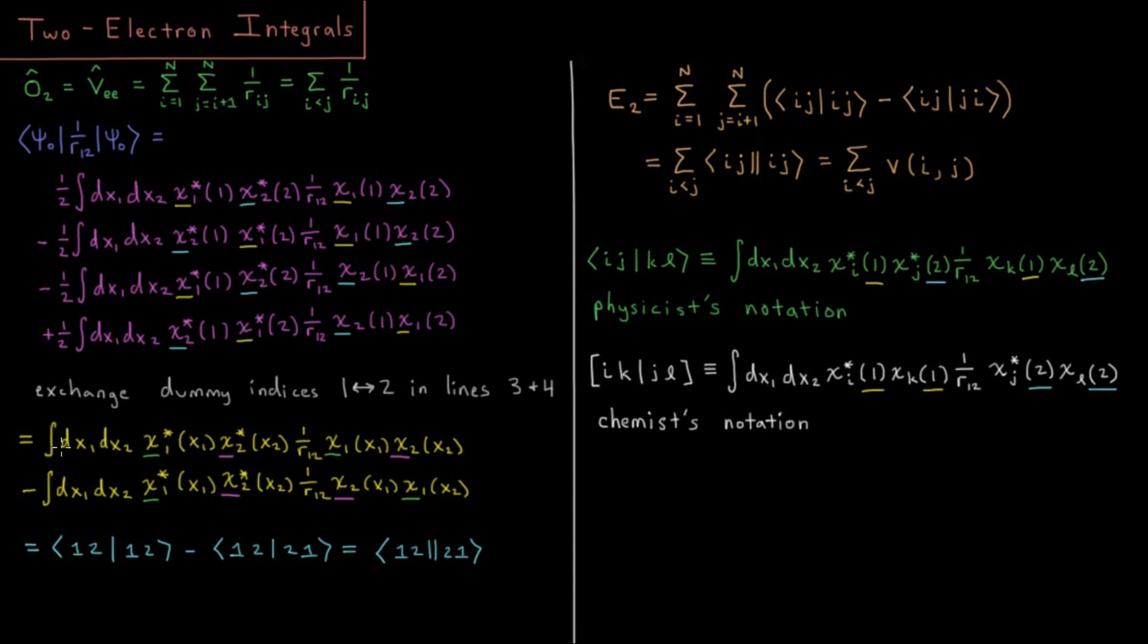We get one kind of integral which is positive, where we see that electron one is in chi one on the right and the left, so chi star one and chi one. And electron two is in spin orbital two in both the complex conjugate and on the normal one. And in the other case, there's a negative sign and you have different spin orbitals the electron is in on opposite sides. Each electron is in both of those spin orbitals on each of the opposite sides of the complex conjugate.